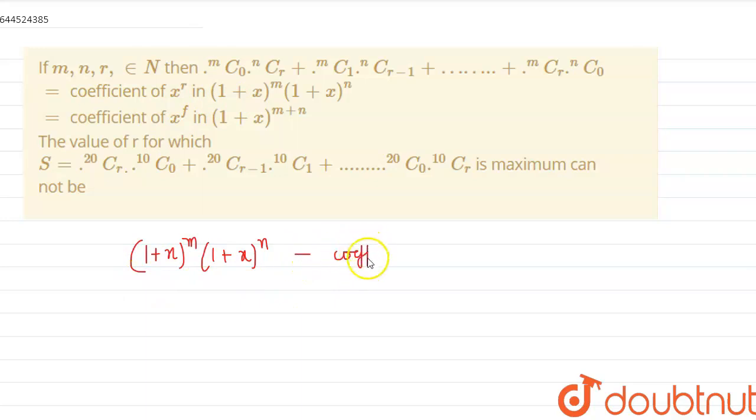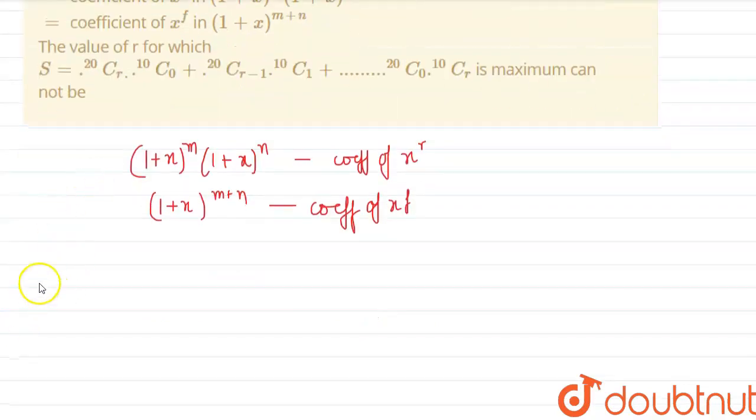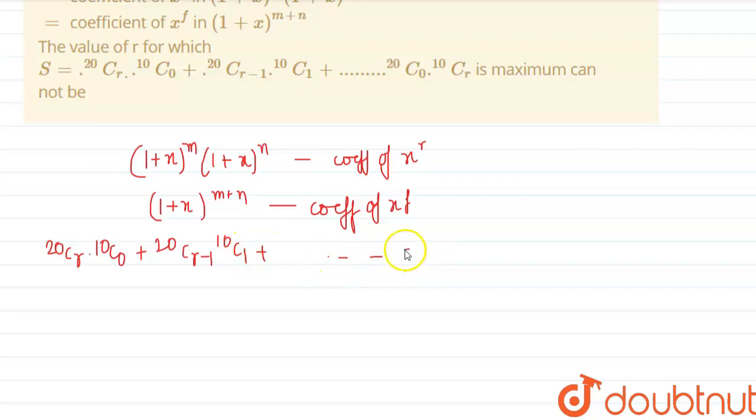So, the coefficient of x^r - if we just add up both these powers, this becomes a new coefficient of x^(m+n). See, this is also the same binomial expansion which has 20Cr·10C0 + 20C(r-1)·10C1 + ... + 20C0·10Cr.